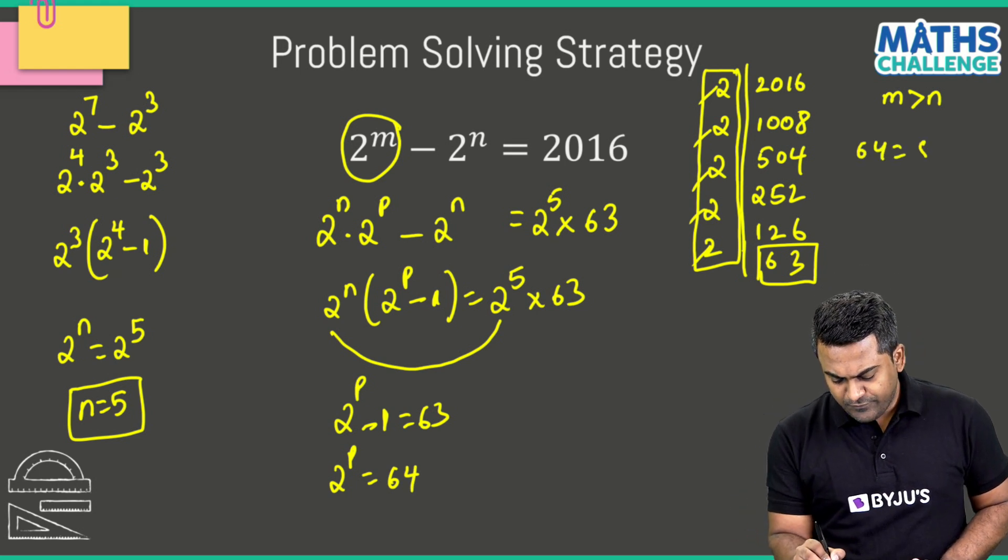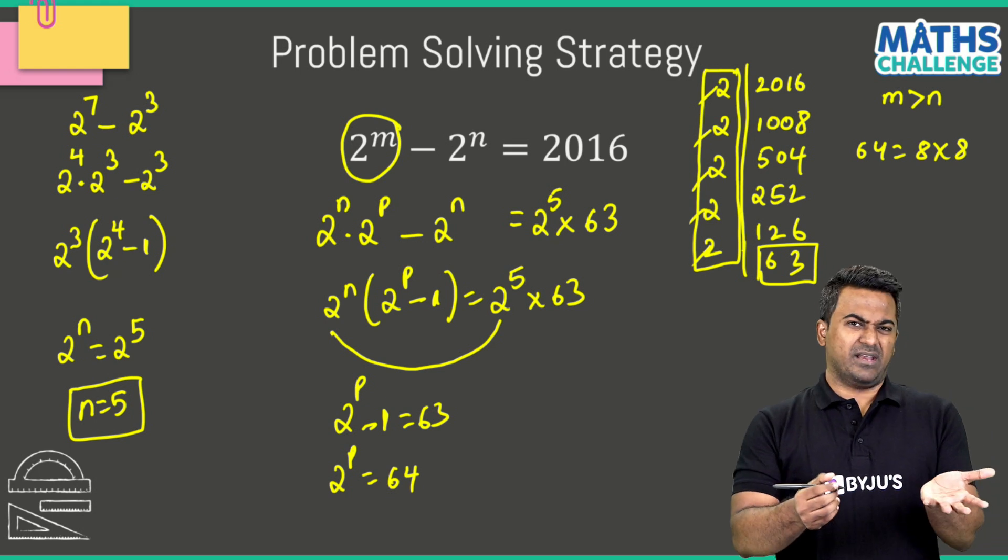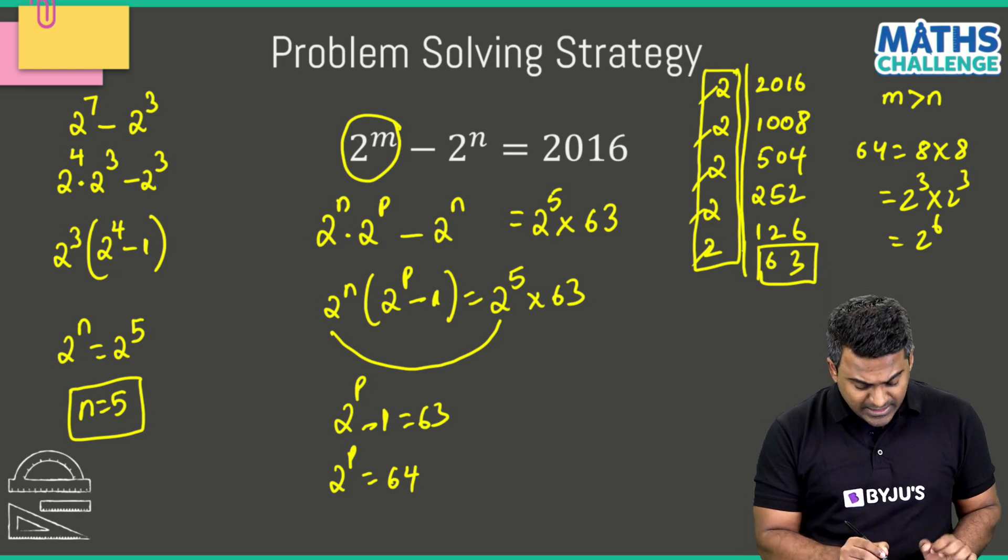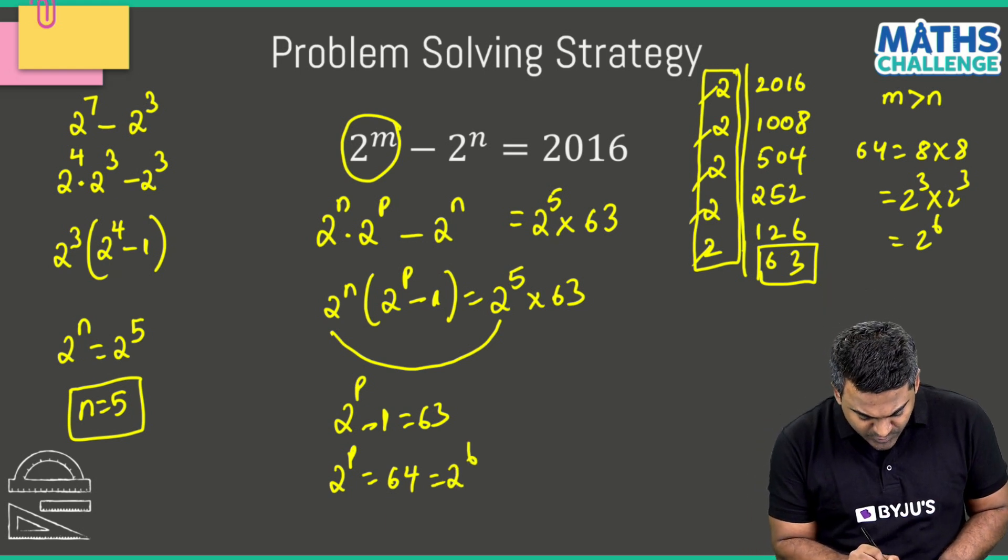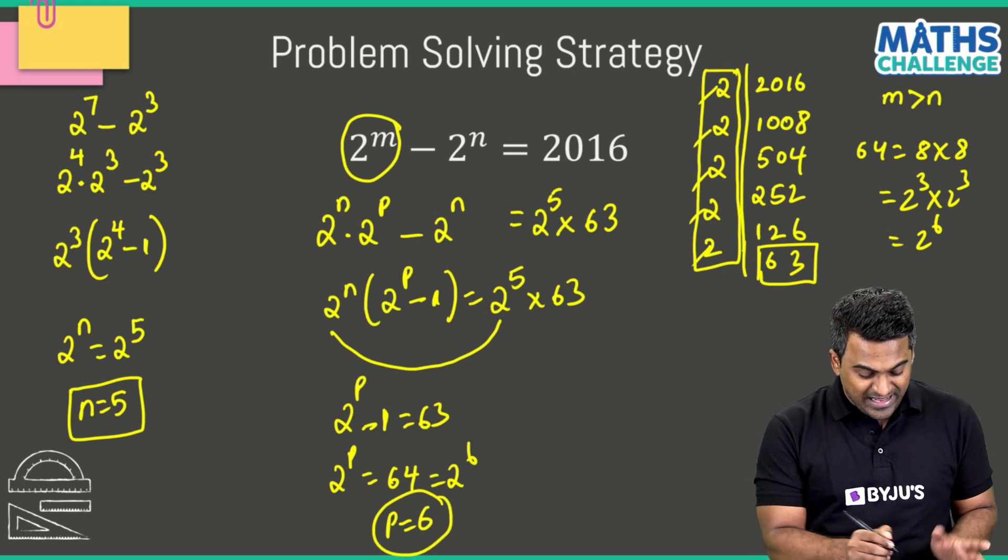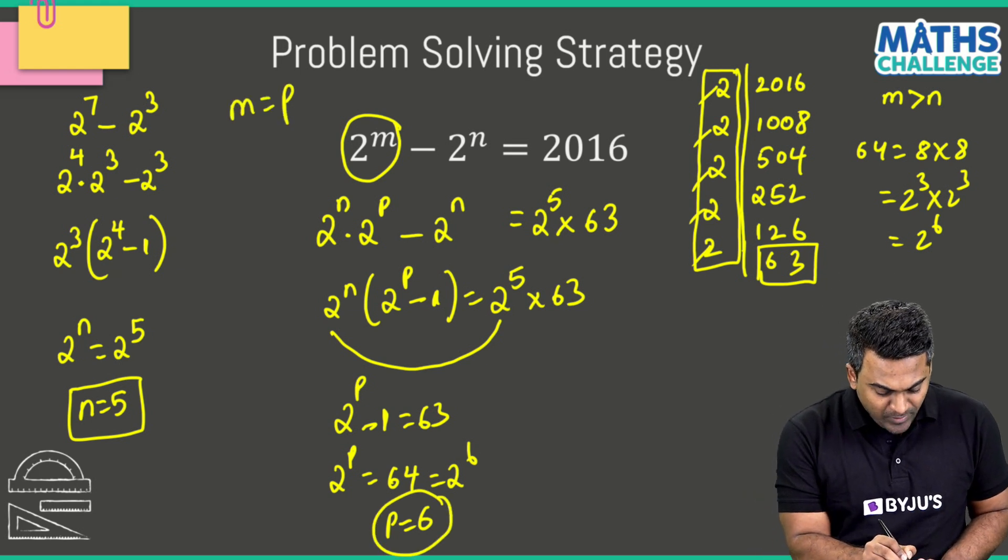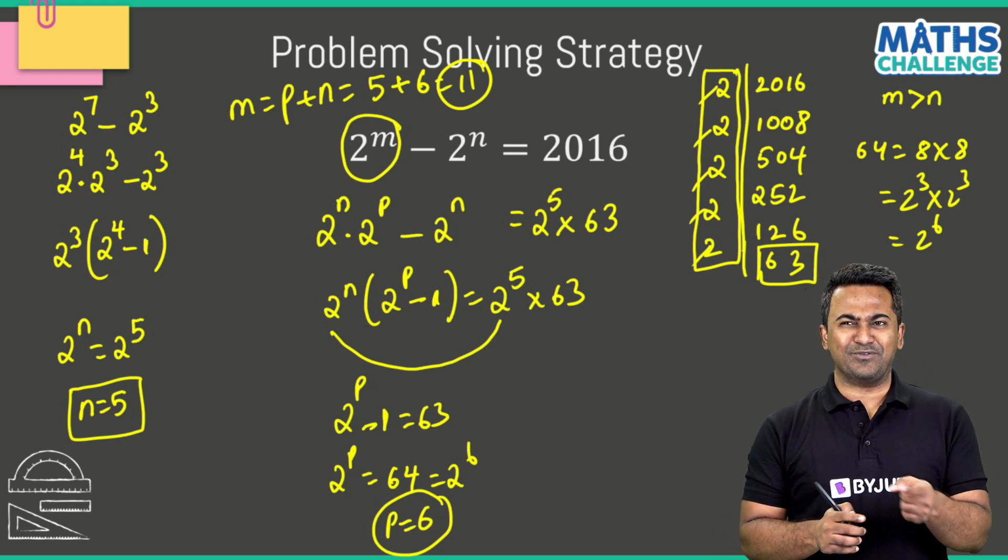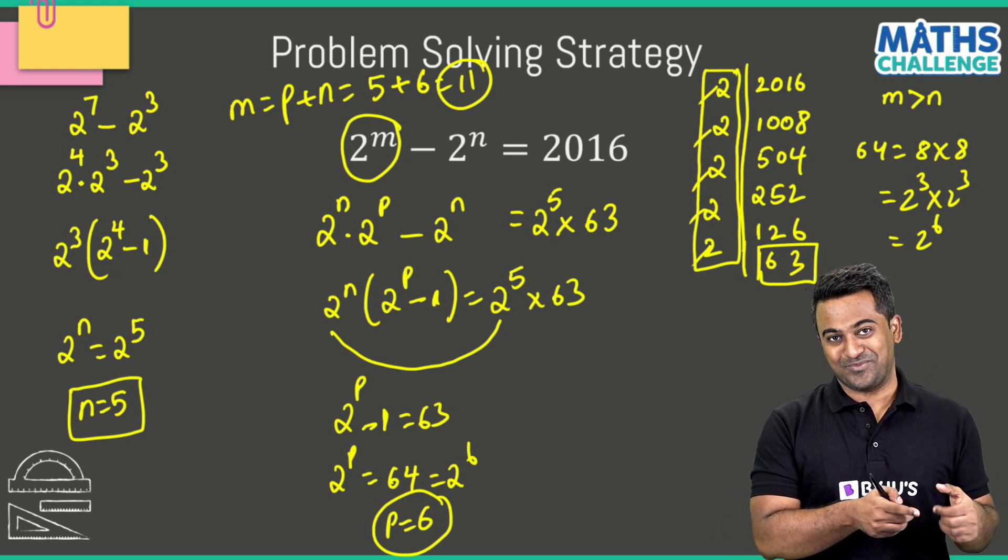Now 64, off the top of my head, can be written as 8 times 8. 8 can be written as 2^3 multiplied with 2^3, so this becomes 2^6. This is 2^6 which means p value is 6. And you all know what m value was - m was p plus n. I know both p and n now. So m value here is going to be 11.